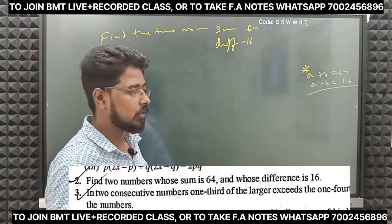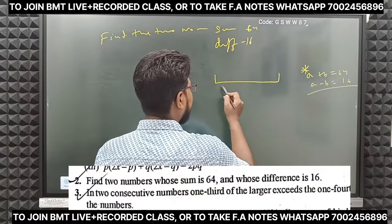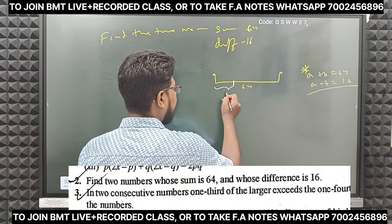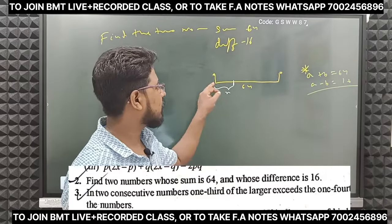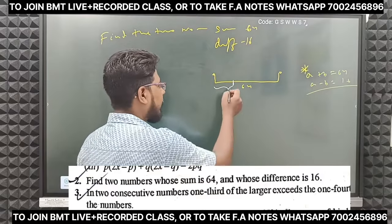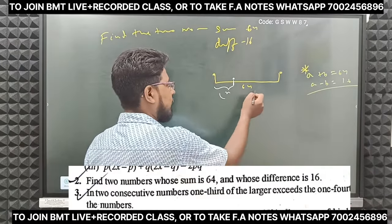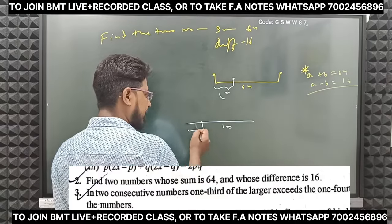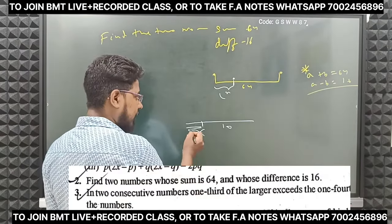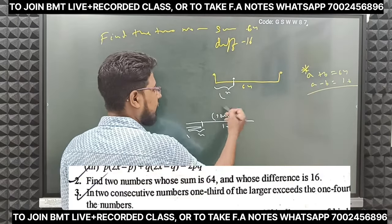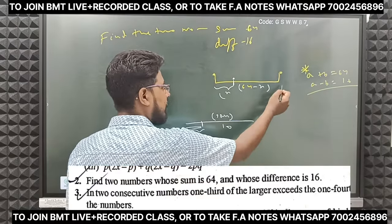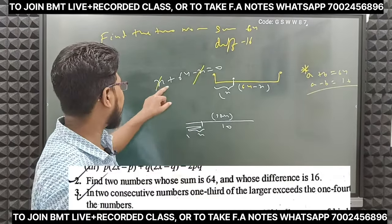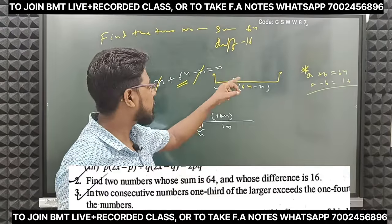If you have to say the sum of two numbers is this much, what number do you have to make? Let the numbers be x and 64 minus x. If you take both and sum them: x plus 64 minus x — the x cancels — and the answer is 64. So the sum condition is already established from this equation.